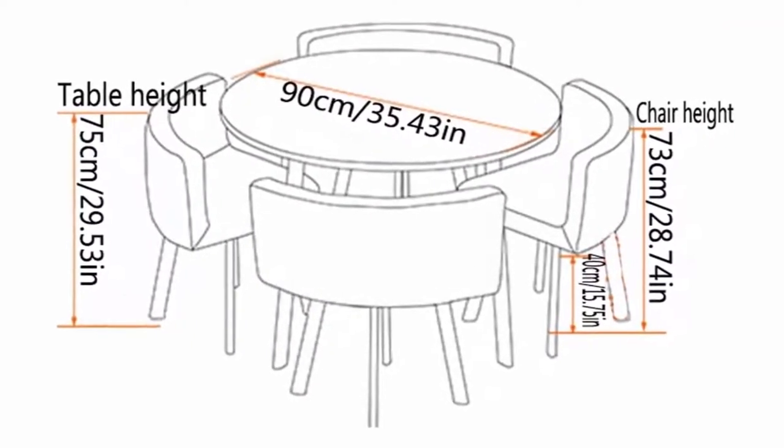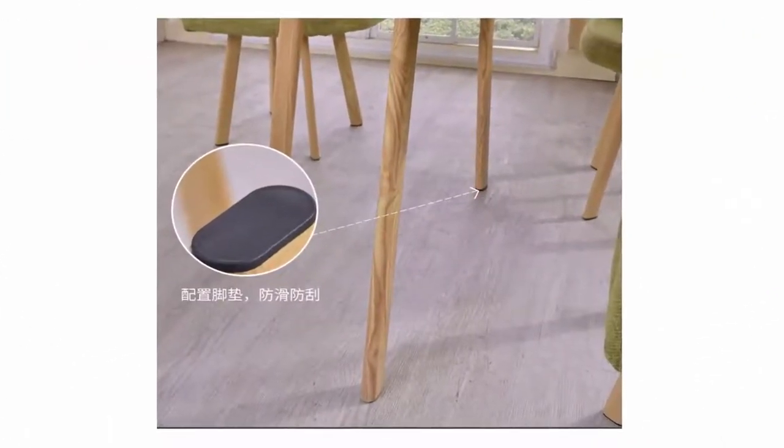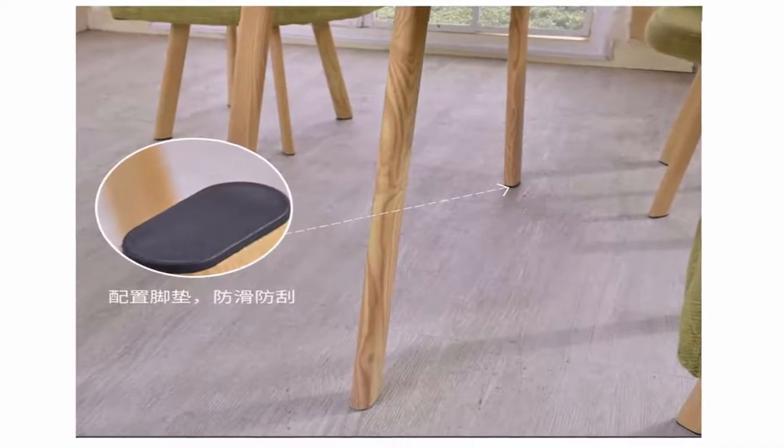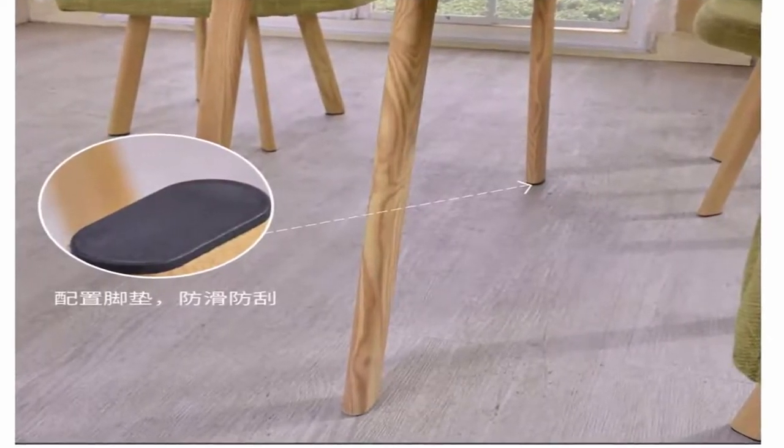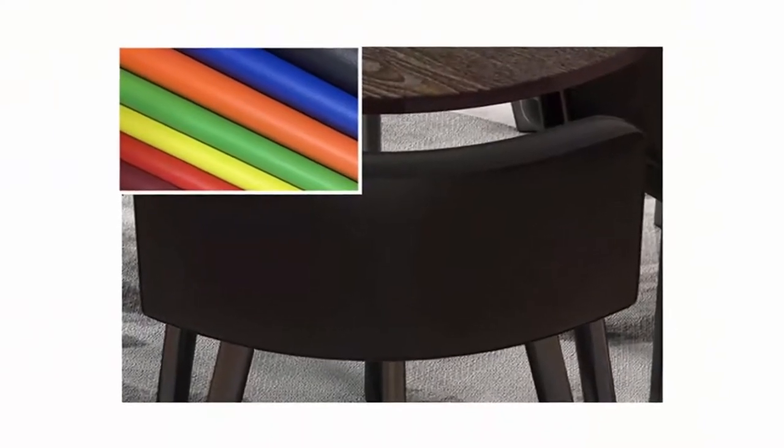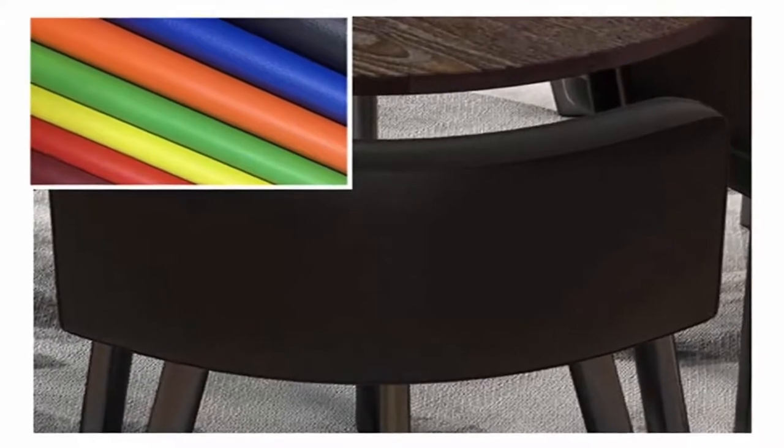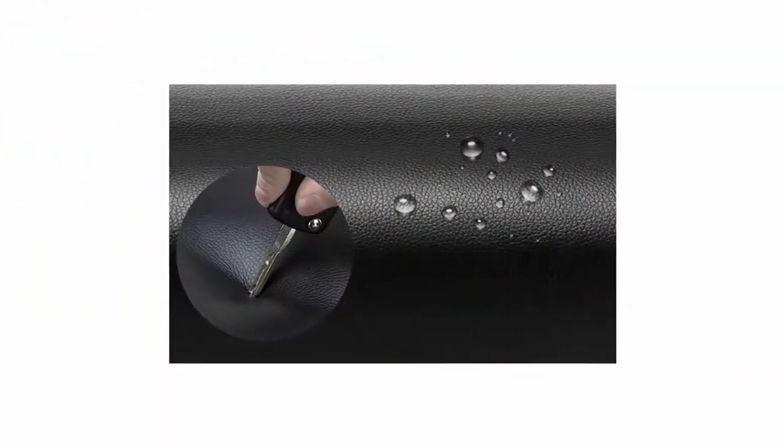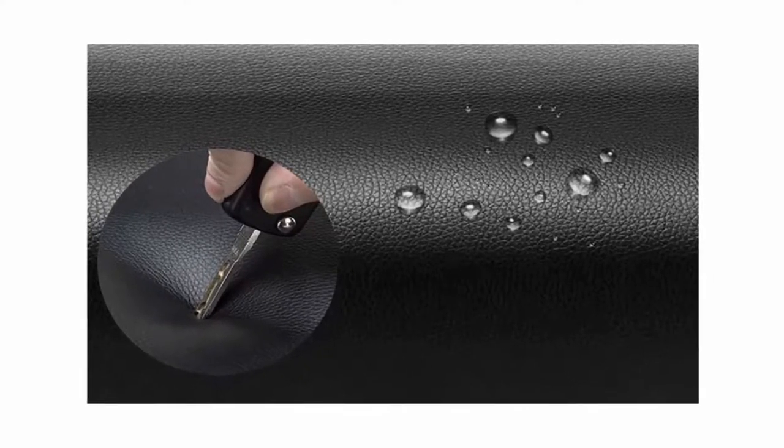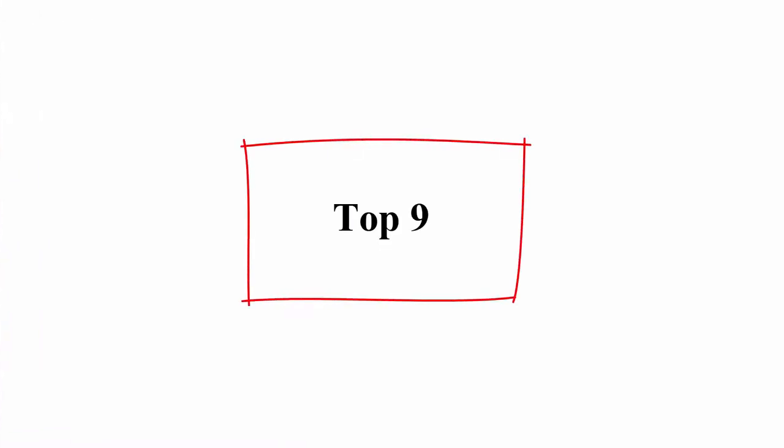The chair backrest and seat cushion are wrapped by high density sponge, which has good resilience, full seat bag, fits the human body and is comfortable to sit. Using high quality MDF desktop. Environmentally friendly and formaldehyde free. The desktop edge is round and sleek, preventing bumps and injuries. The legs are integrally formed without any damage or bending. Non-slip mats. Effectively reduce noise and prevent scratching the floor. Top 9: